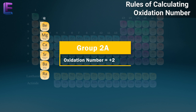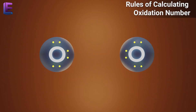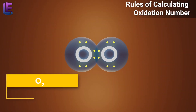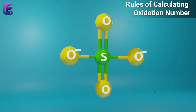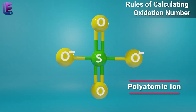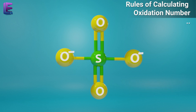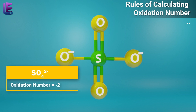In a neutral state, all molecules have an oxidation number of zero. In a polyatomic ion, the algebraic sum of all the oxidation numbers of atoms of the ion must equal the charge on the ion. For example, the oxidation number of the SO4 ion is minus two.